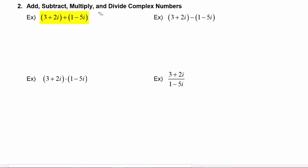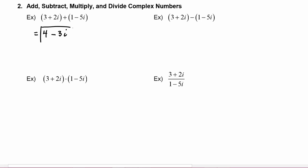In this first example we have to add (3 + 2i) plus (1 - 5i). All we have to do here is combine like terms. So we have 3 plus 1 is equal to 4, and plus 2i and minus 5i becomes minus 3i. We're already finished with this first one.